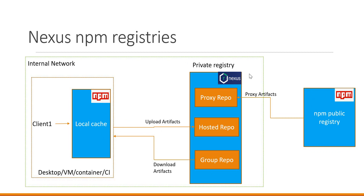To avoid these limitations, we can use a private registry like Nexus. In Nexus Repository Manager, we have three types of repositories. These repositories can be used as NPM registries so that the clients can directly use these repositories instead of the public registry. The proxy repository will proxy the NPM packages directly from the public registry, so the clients can use this proxy repository to download the packages.